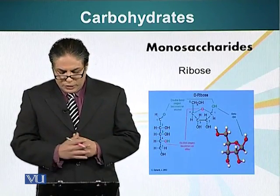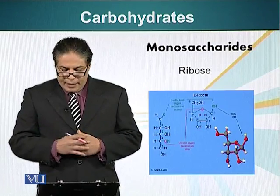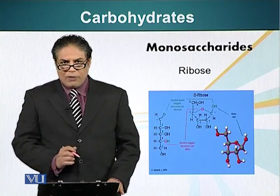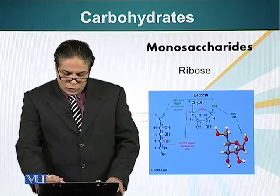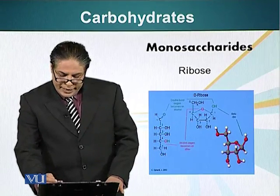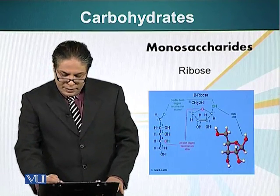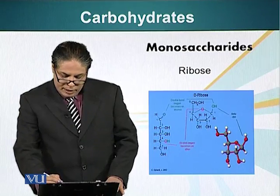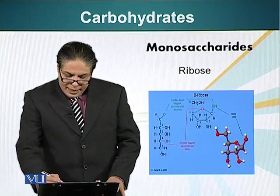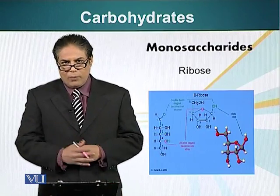One of the monosaccharides I would like to talk about — which we will discuss in significant detail when we talk about DNA or ribonucleic acids — is ribose. This molecule has five carbon atoms, numbered one through five. When this molecule circularizes, please pay attention to the arrangement of the carbon atoms: carbon number one has a hydroxyl group, carbon number two has a hydroxyl group, carbon three has a hydroxyl group, and carbon number five has a hydroxyl group. Carbon atoms two, three, and five are very important in this molecule when we start talking about the DNA polymer.